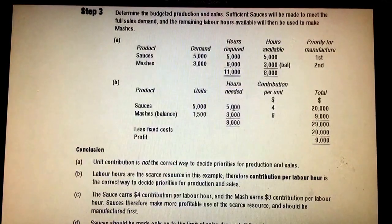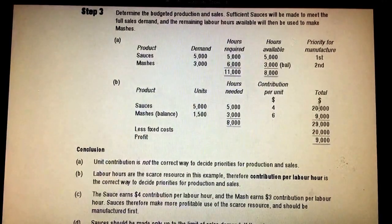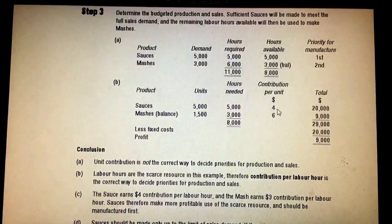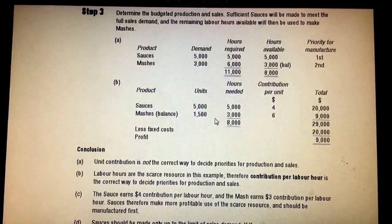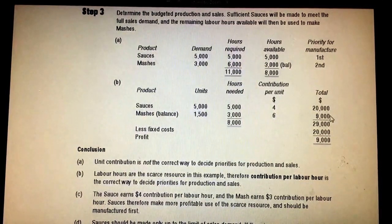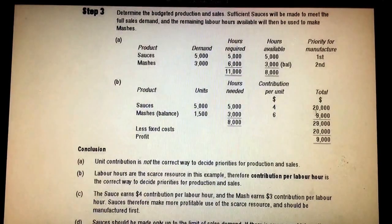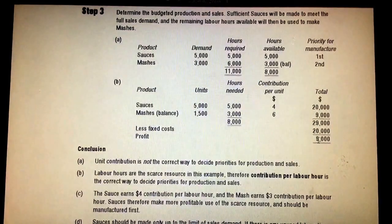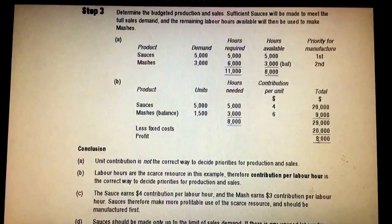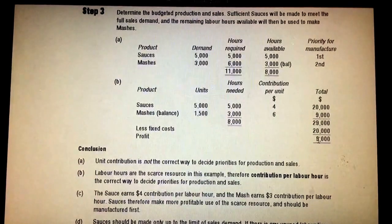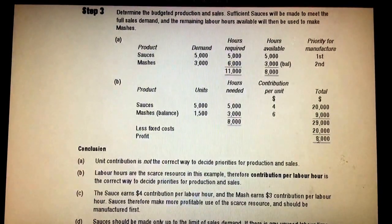Now calculate the total contribution. Sauce: four dollars contribution times five thousand units equals twenty thousand dollars. Mash: six dollars contribution times fifteen hundred units equals nine thousand dollars. Total contribution is twenty-nine thousand dollars. Less fixed costs of twenty thousand dollars, giving a profit of nine thousand dollars.